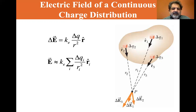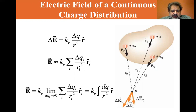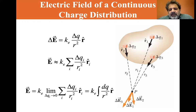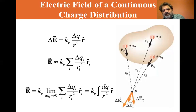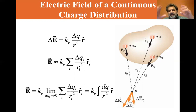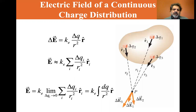If we take the limit as Delta Q approaches zero, you end up with KE times the integral of dQ over R squared times R-hat. So basically, if you have a charge distribution you have to take the integral of it to get the total charge.